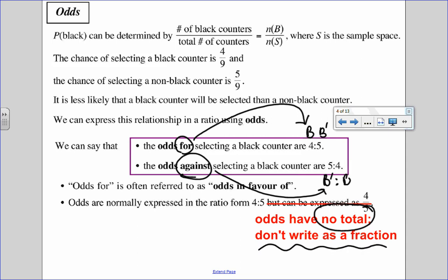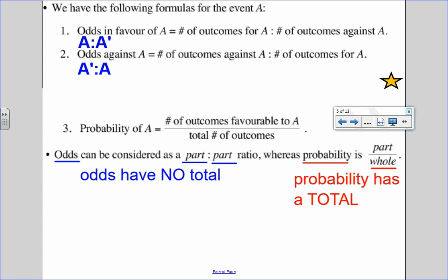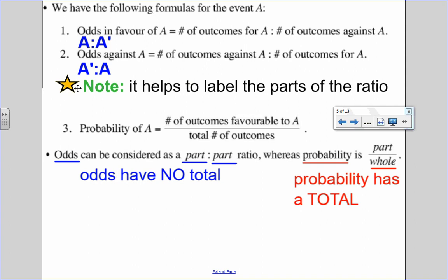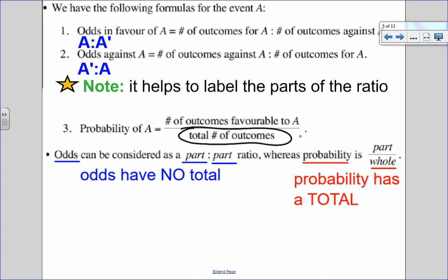Therefore, we should not write it as a fraction. It is a ratio. When we write things as a fraction, it implies that there is a total and odds have no total. Okay, so let's look. If we're talking about odds in favor of event A, we're talking about all the ways A can happen to all the ways that it can't. If we're talking about the odds against, we're talking about all the ways A can't happen to all the ways A can. I always like to label the parts of my ratio so it can keep me organized. Now, probability and odds are closely tied because if I add up the odds in favor to the odds against, I get the total number of outcomes.